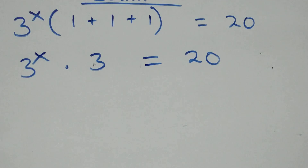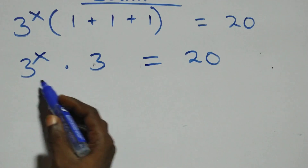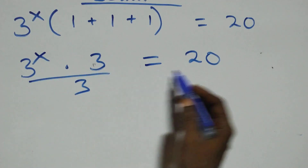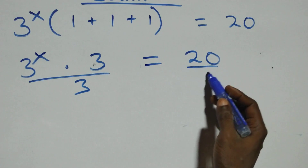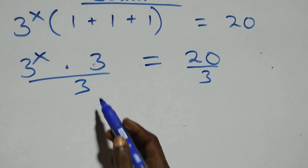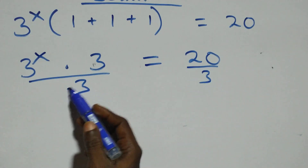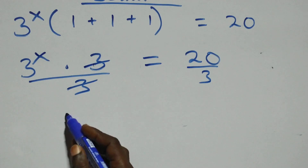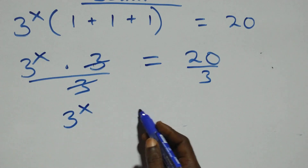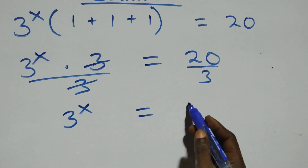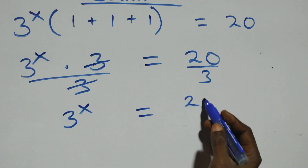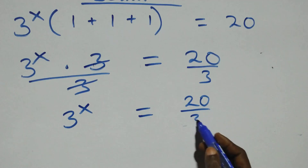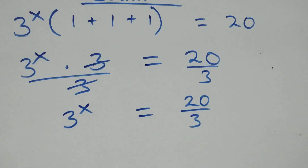Our next step: we divide both sides by 3. The 3s cancel each other and we have 3 raised to the power x equals 20 over 3.